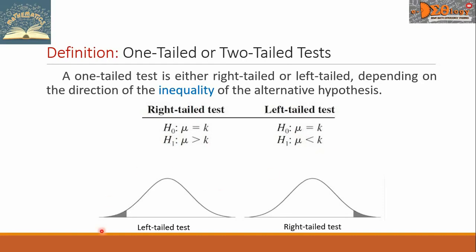In the figure, this is the left-tailed test. By the word itself, the left tail of the normal curve is being shaded. While the right-tailed test, the right tail here is being shaded.